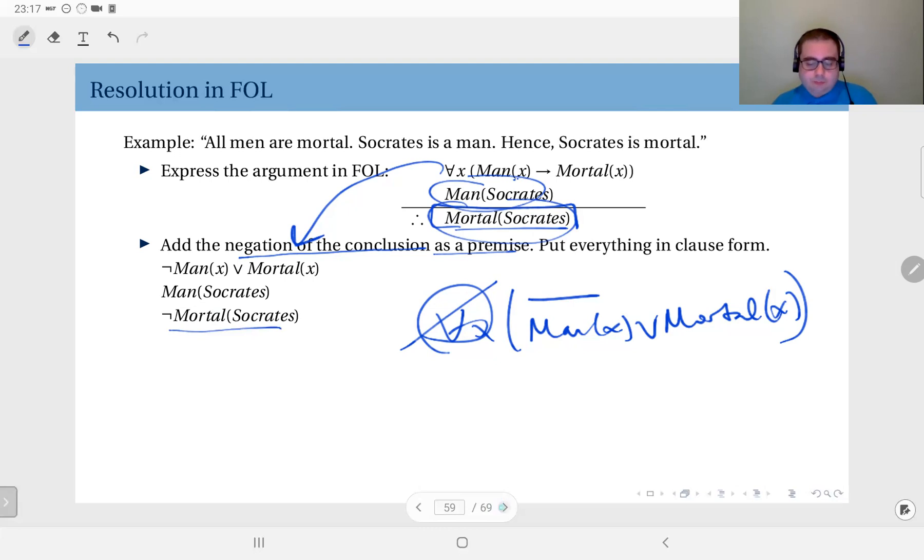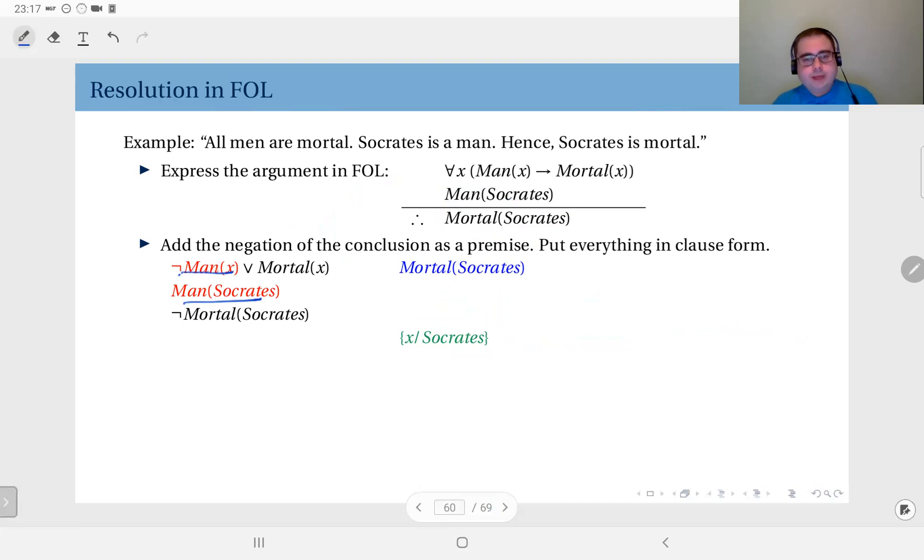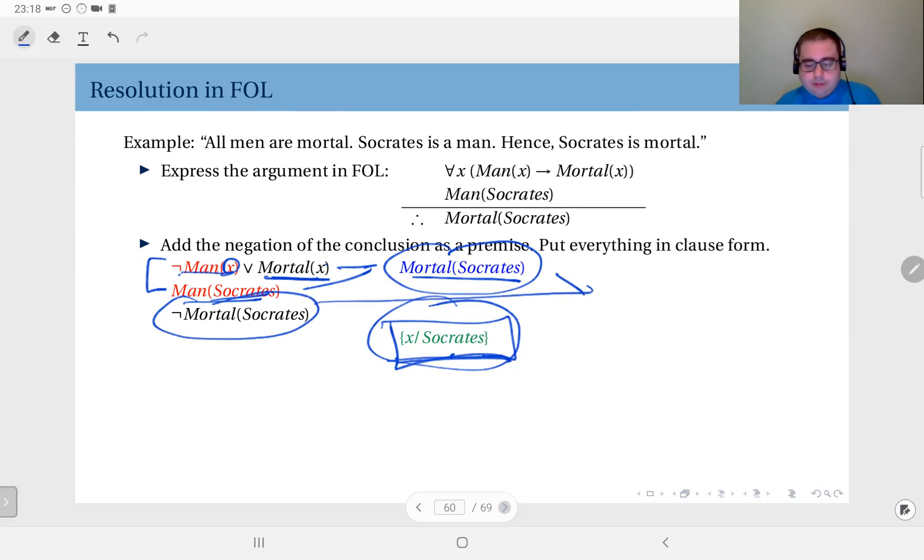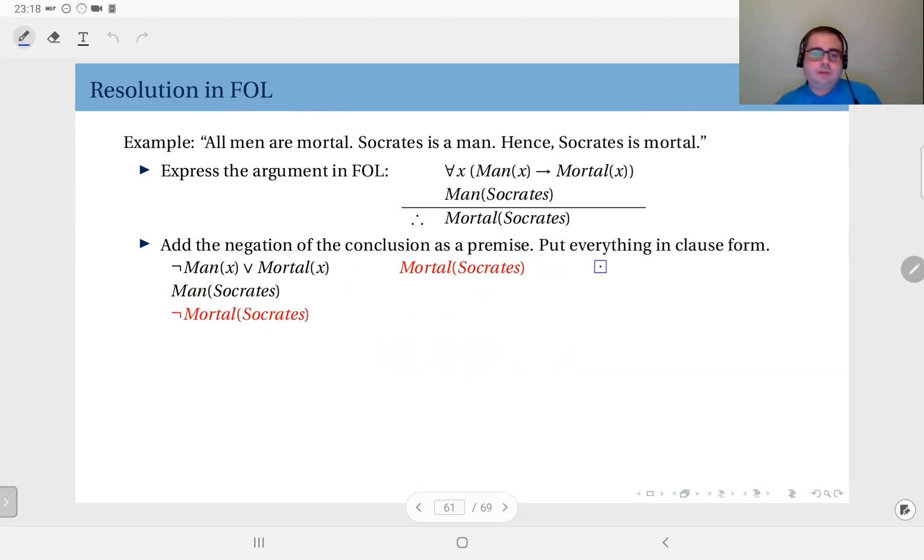This is ¬Man(x) and this is Man(Socrates). They are not identical, but we can unify them using the substitution x → Socrates. If you put Socrates into x, these become the complement of each other, so we can resolve these two. What we are left with is Mortal(Socrates), because we have now substituted x for Socrates. Be careful with this step: you are unifying these two using this substitution. This is important—you have to be aware of what substitution you are applying, and do not forget to apply it to the entire premise. So I have now Mortal(Socrates) and ¬Mortal(Socrates). I will resolve these into the empty clause. Therefore, this shows that the original argument is valid.